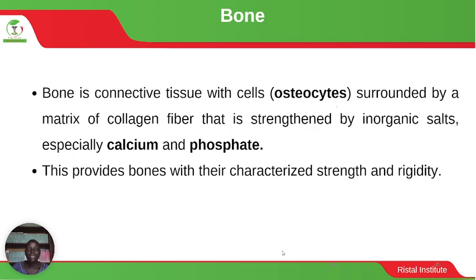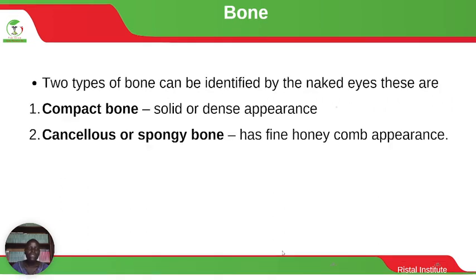Bone is a connective tissue whose cells are known as osteocytes. They are surrounded by a matrix of collagen fiber strengthened by inorganic salts, especially calcium and phosphate — this provides bones with their characteristic strength and rigidity. Two types of bone can be identified by the naked eye: compact bone, which has a solid or dense appearance, and cancellous or spongy bone, which has a fine honeycomb or porous appearance.